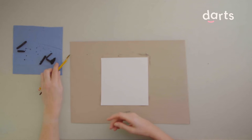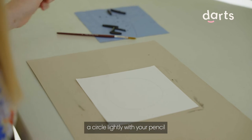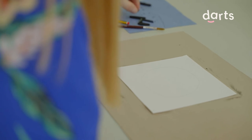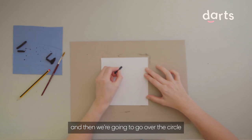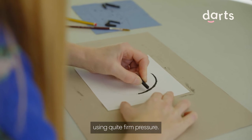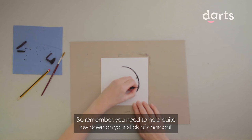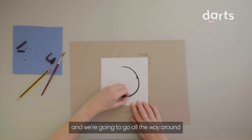I'm going to draw a circle lightly with your pencil, and then we're going to go over the circle using quite firm pressure. Remember, you need to hold quite low down on your stick of charcoal. Go all the way around your circle.